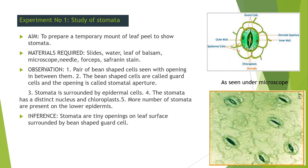Now children, this is your first experiment in biology: the study of stomata. The aim is to prepare a temporary mount of a leaf epidermal peel to show stomata. Materials required are: a slide, water, leaf of balsam (known as kashitumbak in Malayalam), microscope, needle, forceps, and safranin stain. A very thin epidermal peel of the leaf is taken, stained with safranin stain, and placed under the microscope for observation.